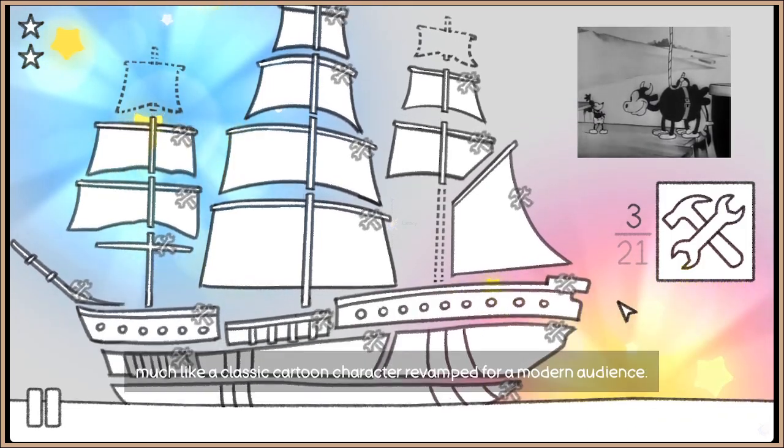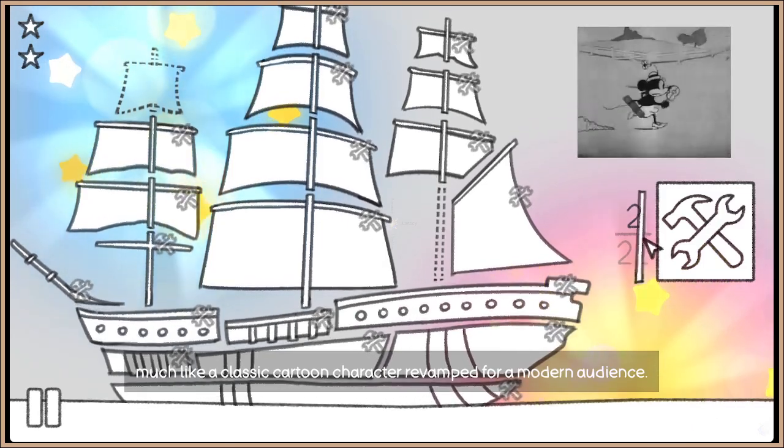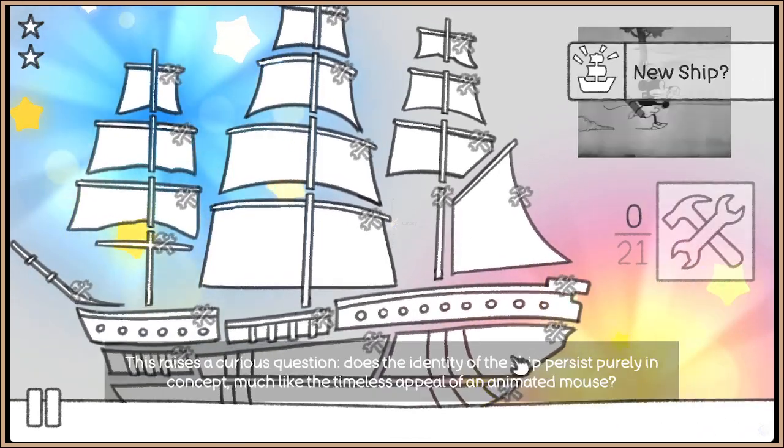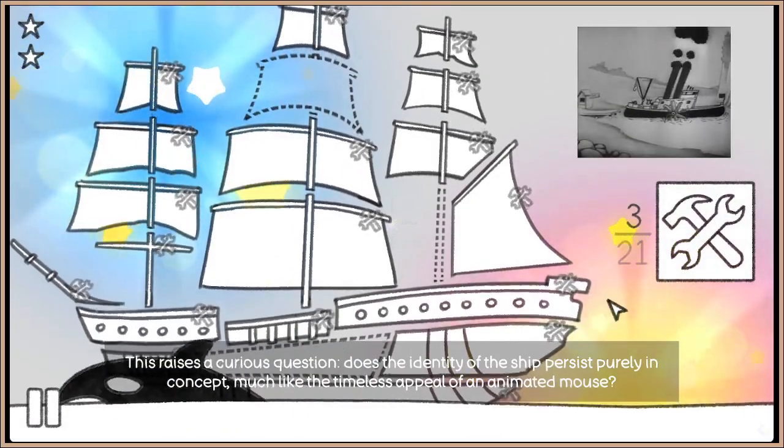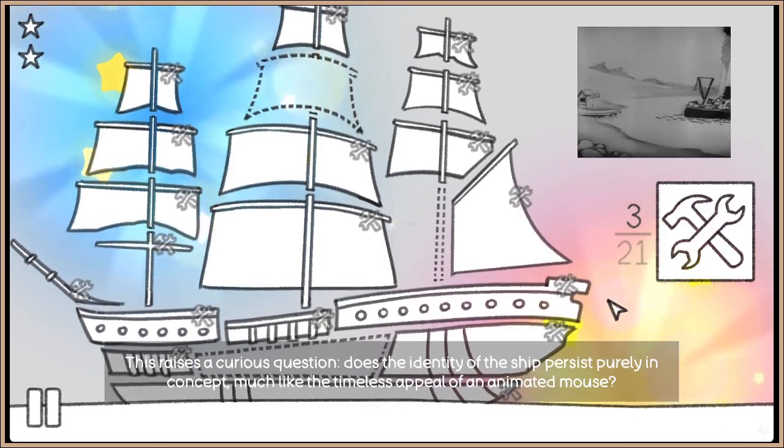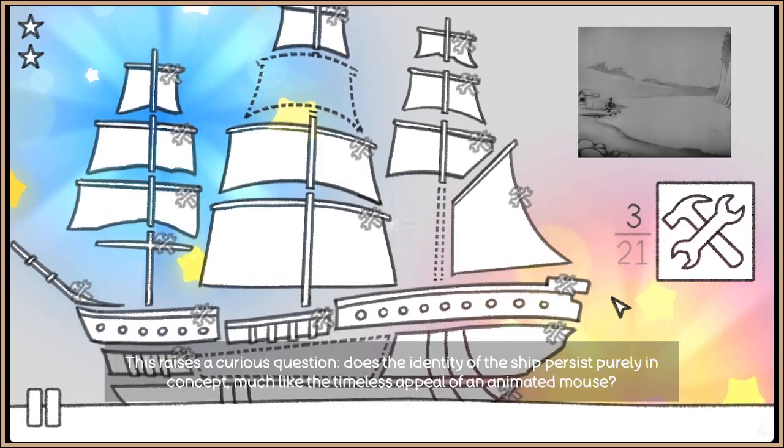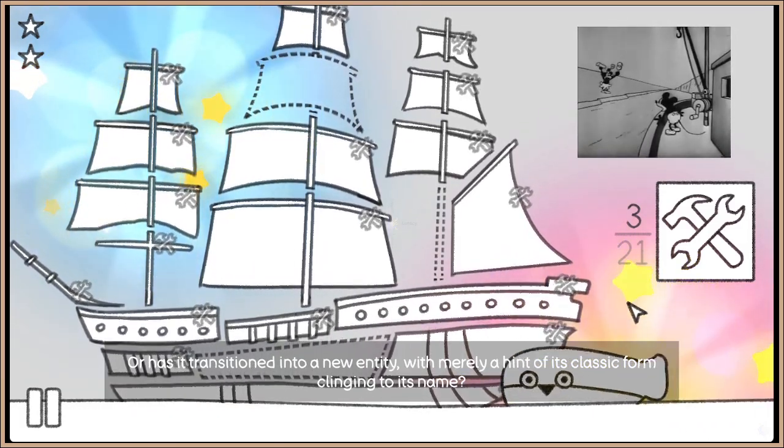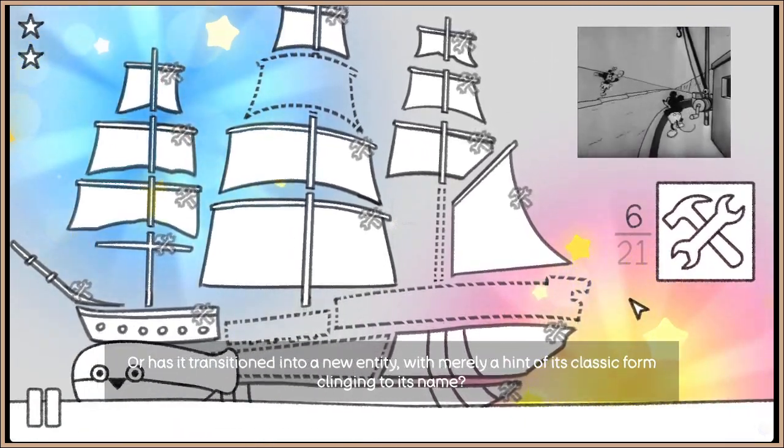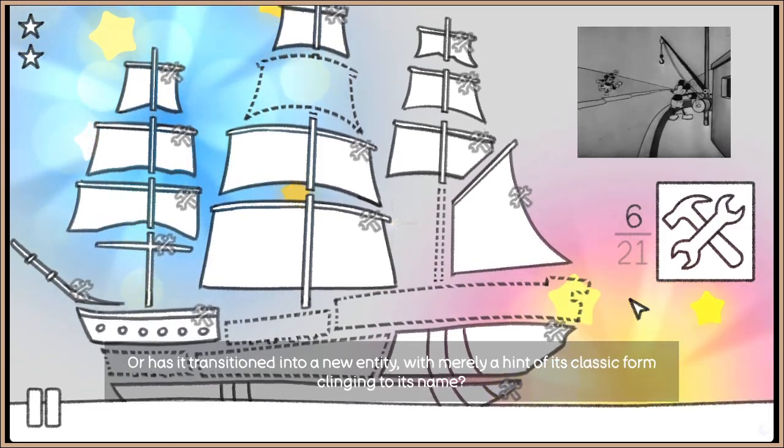When all parts are replaced, a newly constructed ship stands but carries the old name, like a classic anime character renewed in a modern version. This raises an interesting question: does the ship's identity persist purely as a concept, like the timeless appeal of an anime character, or has it transformed into a new existence with only a part of its classical form clinging to the name?